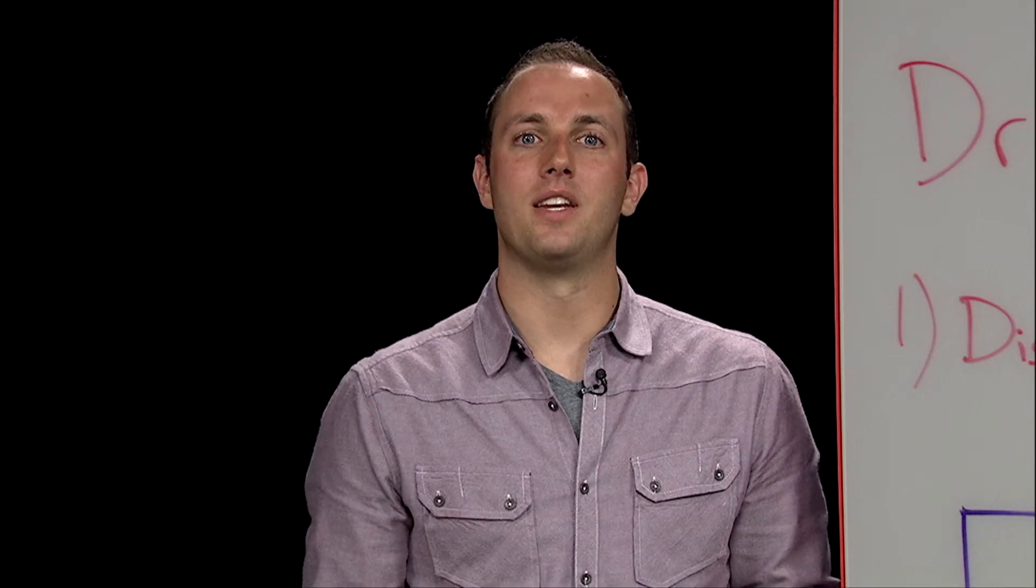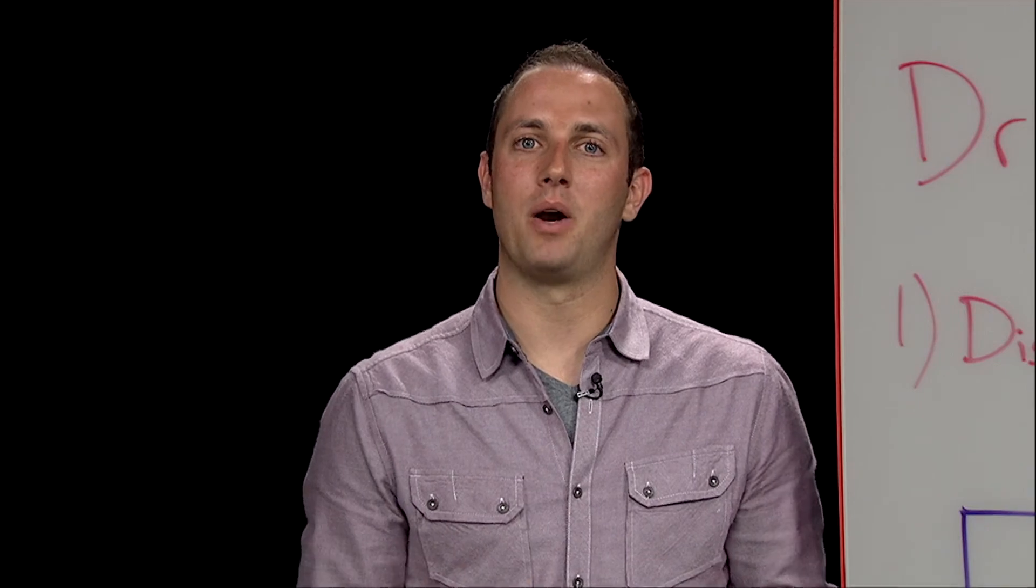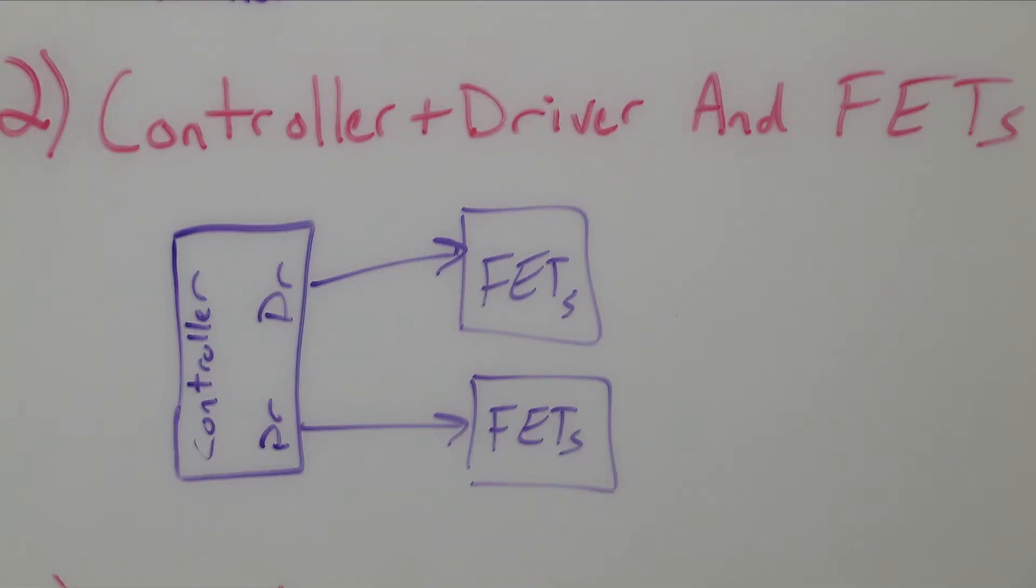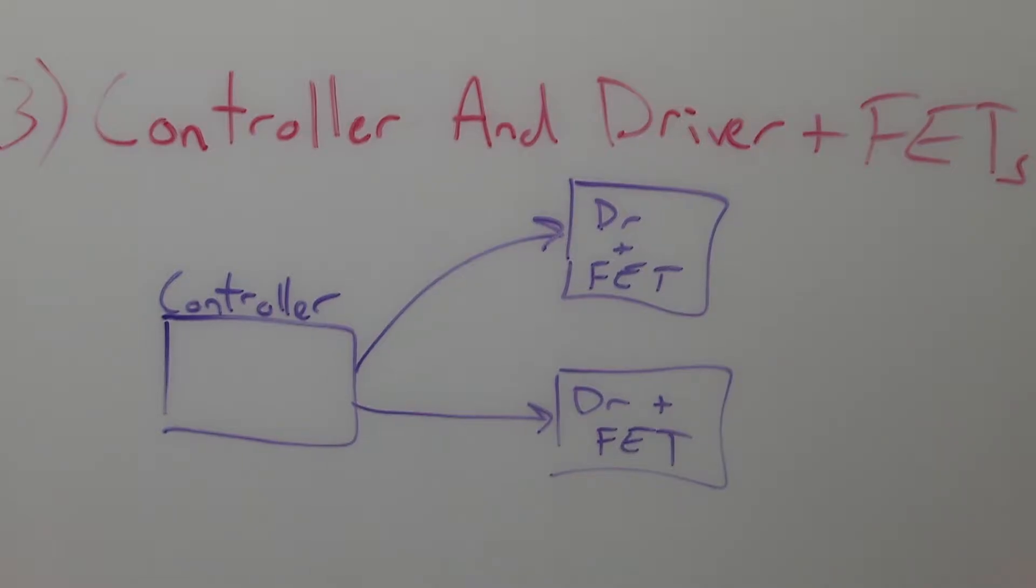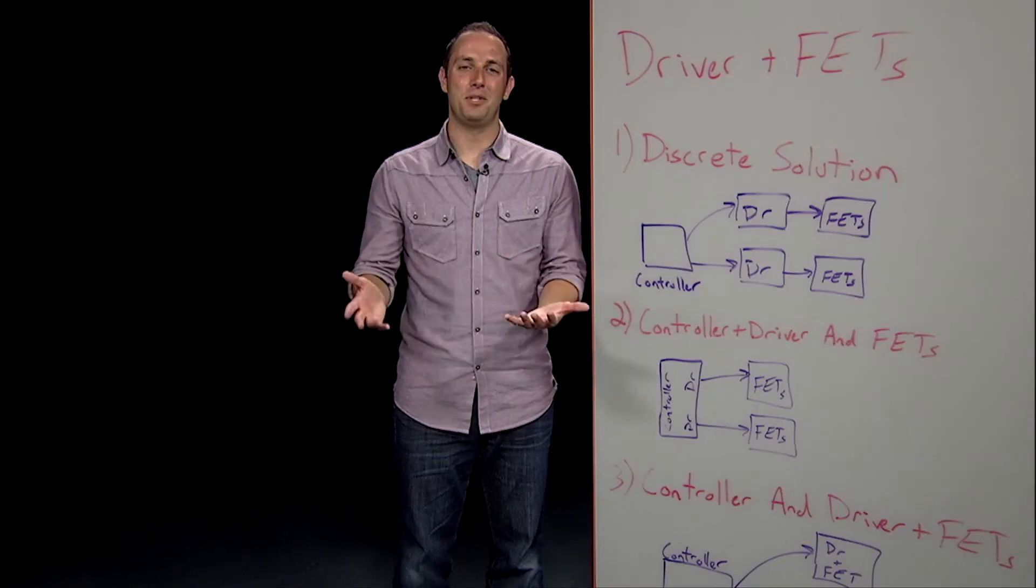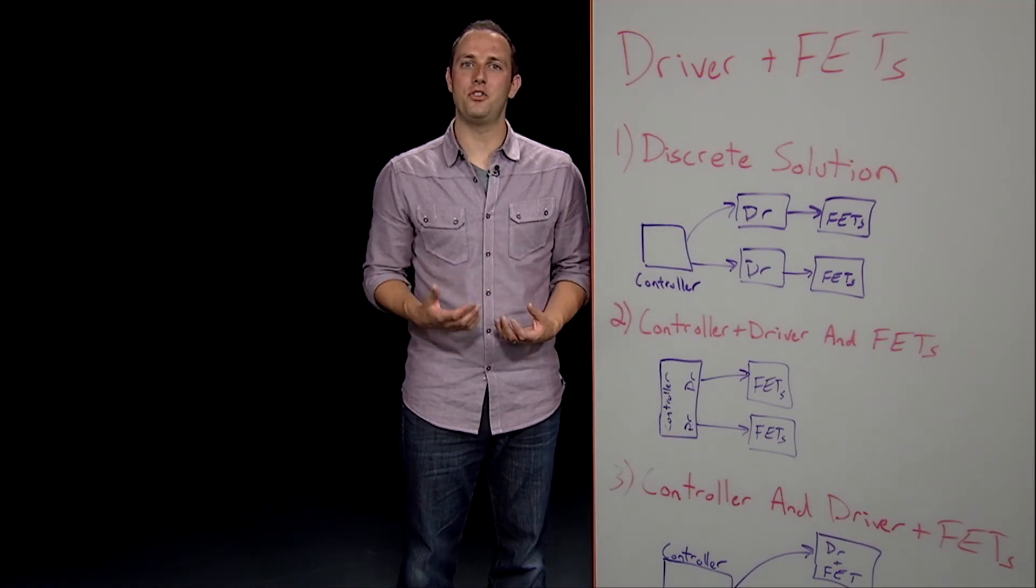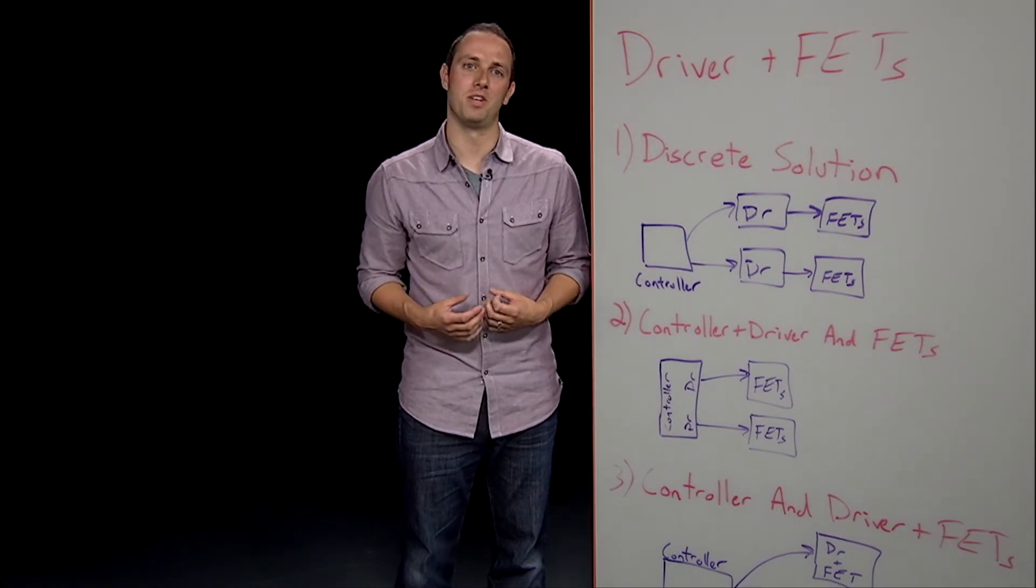Moving on, we can now tackle the issue of picking our driver and power MOSFETs from one of three available options. Option one is an all-discrete solution using separate ICs for the controller, driver, and FETs. Option two combines the controller and the driver portion while using discrete FETs for each phase. Option three has a controller with a driver plus FET package for each phase. To keep this video under a day and a half in length, we'll just briefly talk about the pros and cons of each, but it's really a topic worthy of its own video.